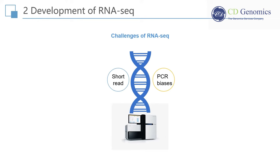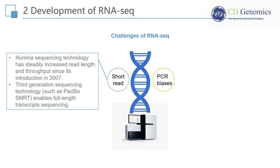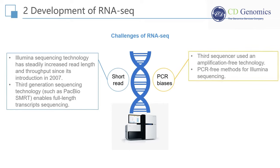Short-read used to be one concern, but Illumina sequencing technology has steadily increased read length and throughput since its introduction in 2007. Long paired-end and strand-specific reads are commonly used for higher levels of mappability and de novo assembly of transcriptomes. Furthermore, the third-generation sequencing technology, such as Pacific Biosciences SMART, enables full-length transcript sequencing. Another concern is the impact of PCR amplification on the accuracy of gene expression quantitation via RNA-Seq. Helicos and some third-generation sequencers use an amplification-free technology, and there are also PCR-free methods for Illumina sequencing.